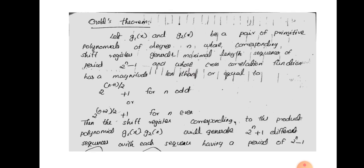Gold's theorem essentially says: if you have different primitive polynomial values — for example, 1 + x + x², which gives a linear feedback shift register — the PN sequences generated by those polynomials are of maximum length. The two primitive polynomials g1(x) and g2(x) are each of degree n. For example, 1 + x + x³ is degree 3, and the maximum-length PN sequence has 2^n − 1 bits.